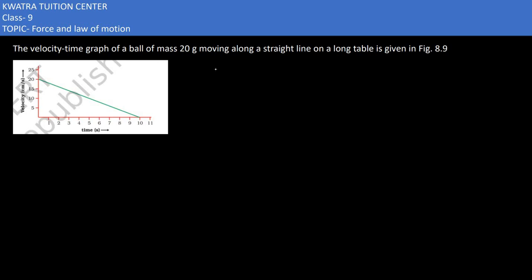Here in the fifth example, we have the velocity-time graph of a ball of mass 20 grams moving along a straight line on a long table. The velocity is in centimeters per second.